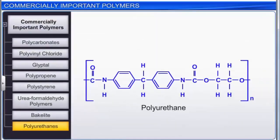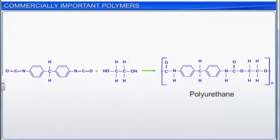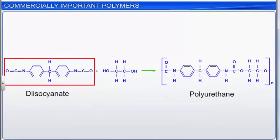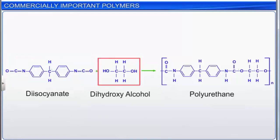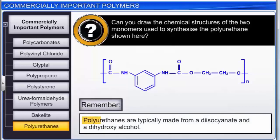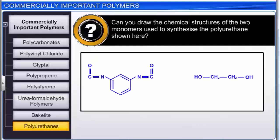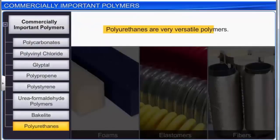Polyurethanes are a class of polymers with a urethane linkage, generally made from two monomers: a diisocyanate and a dihydroxy alcohol. Polyurethanes are very versatile polymers whose many forms include foams, elastomers, and fibers.